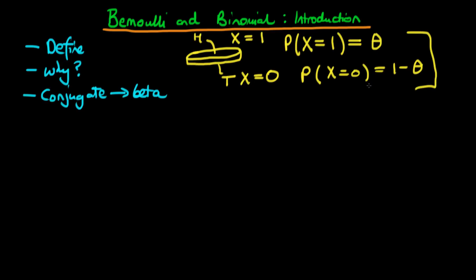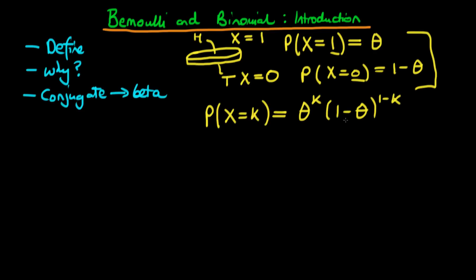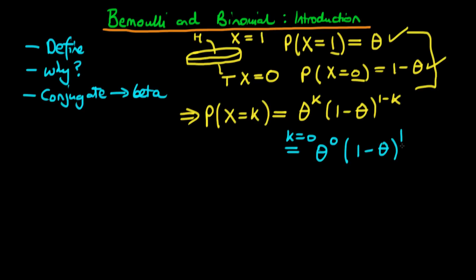What we'd like to do is combine both of these probabilities into a single function. We derive the probability that x equals k — where k can be either 1 or 0 — and say that this equals theta to the power k times 1 minus theta to the power 1 minus k. If k equals 0, this becomes theta to the power 0 times 1 minus theta to the power 1, and since theta to the power 0 is just 1, this simplifies to 1 minus theta.